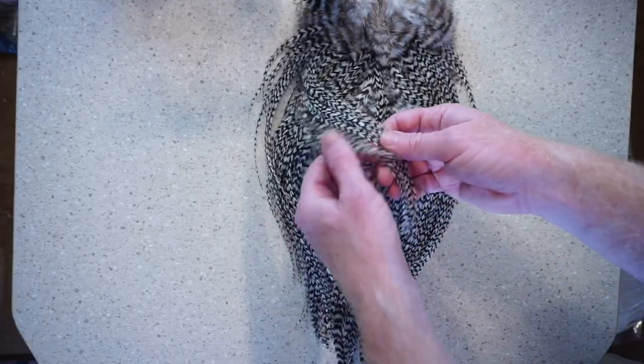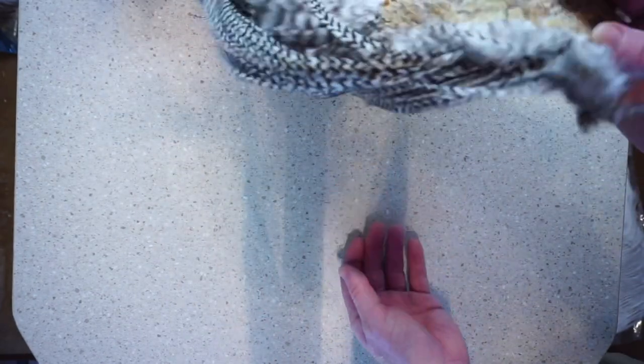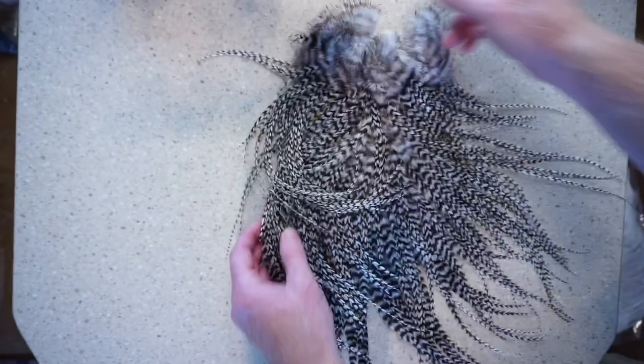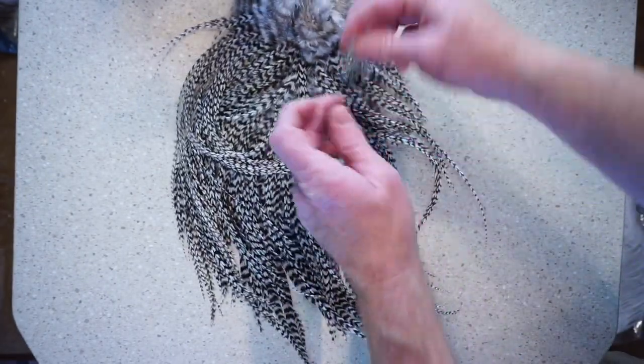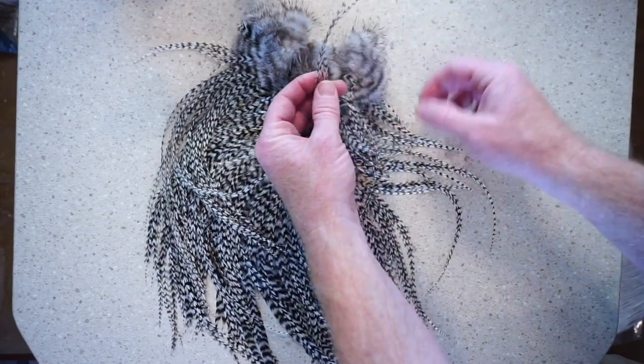And for the saddle, you're going to want to try to find the thinnest of the feathers that you can. You can do this by hanging it upside down and looking. Once you learn where they're at, you'll know right where to go. You don't have to be super long, unless you're tying a really big version of this fly.